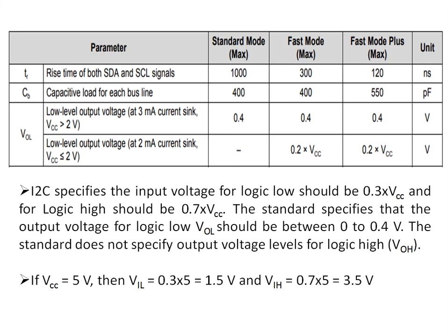VOL, the output logic low level, is 0.4 volts maximum. The standard does not define VOH, the output logic high threshold. So I2C specifies input voltage for logic low as 0.3 VCC and logic high as 0.7 VCC. The output voltage for logic low VOL should be between 0 to 0.4 volts. The standard does not specify the output voltage for logic high VOH. If VCC equals 5 volts, VIL equals 1.5 volts and VIH equals 3.5 volts.